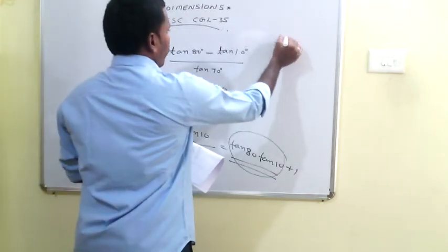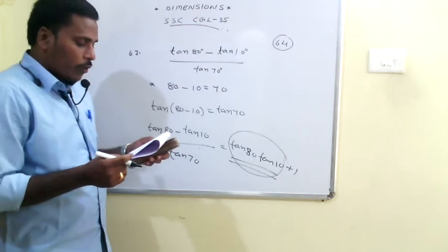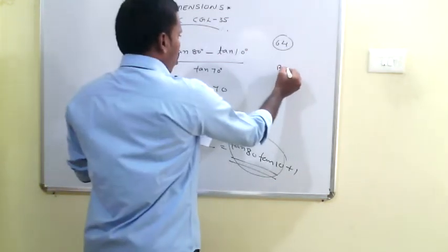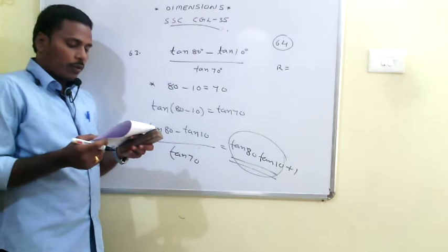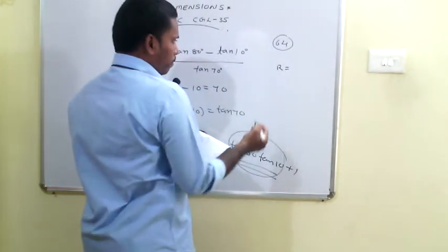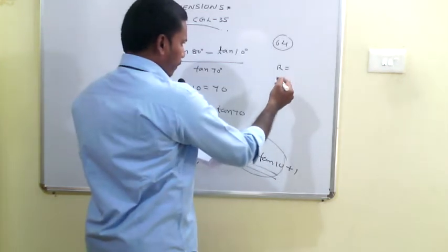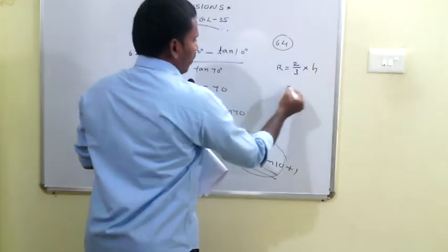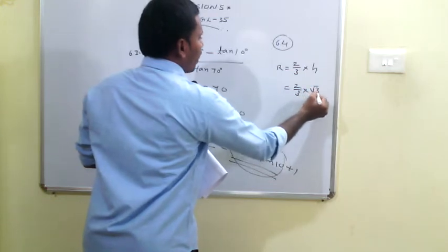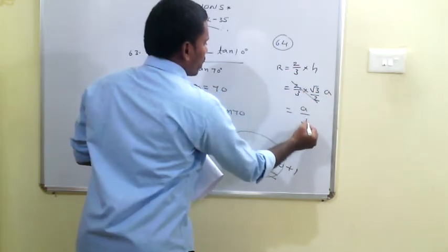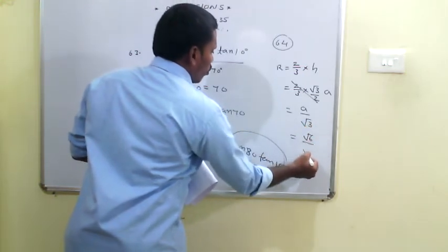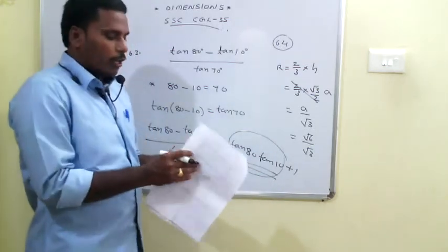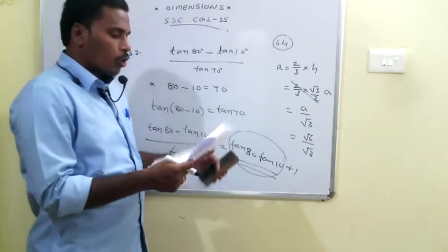The 64th problem: the length of each side of an equilateral triangle is √6; find its circumradius. The circumradius R of an equilateral triangle equals 2/3 of its height. Height = (√3/2) × A, so R = (2/3) × (√3/2) × A = A/√3 = √6/√3 = √2. The circumradius is √2.